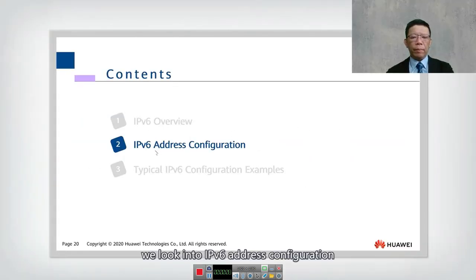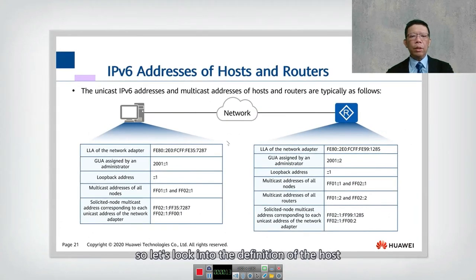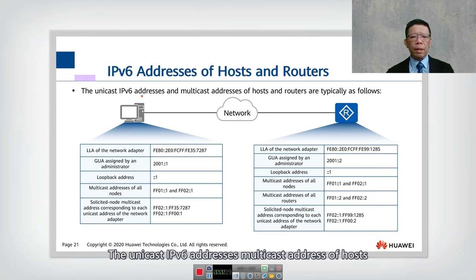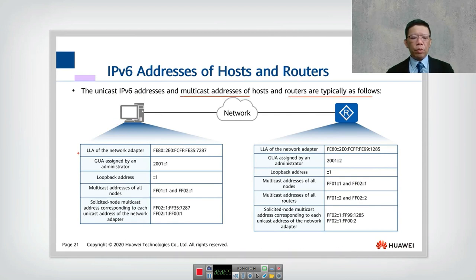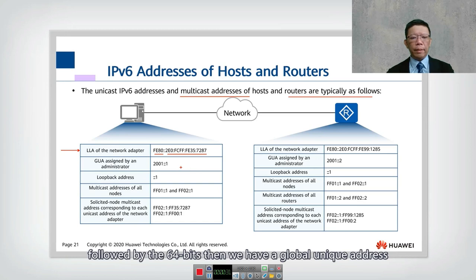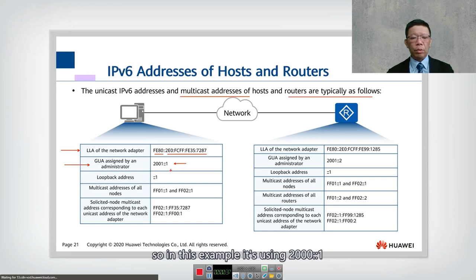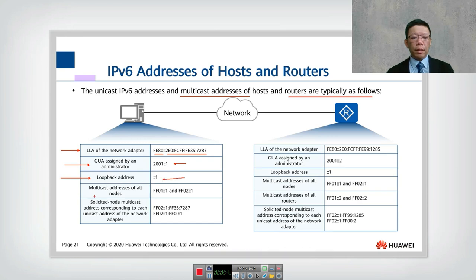In this chapter we look into IPv6 address configuration. Let's look into the definition of host and router in IPv6. The unicast IPv6 addresses and multicast addresses of hosts and routers are typical as follows. For a host, we have a link-local address starting with fe80 followed by a 64-bit identifier, a global unique address assigned by the administrator such as 2000::1 or 2001::1, and a loopback address which is ::1. We also have a multicast address such as ff01::1 or ff02::1.